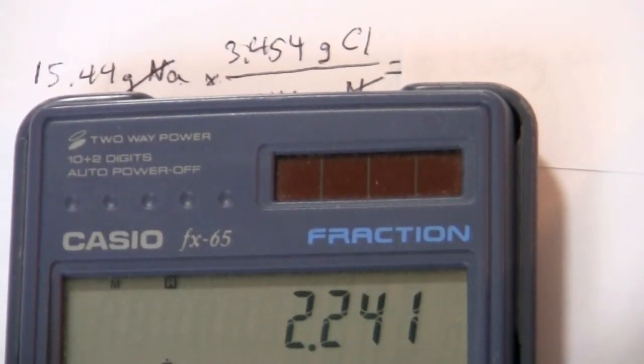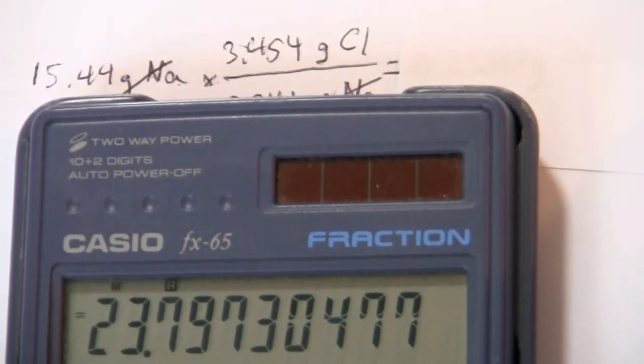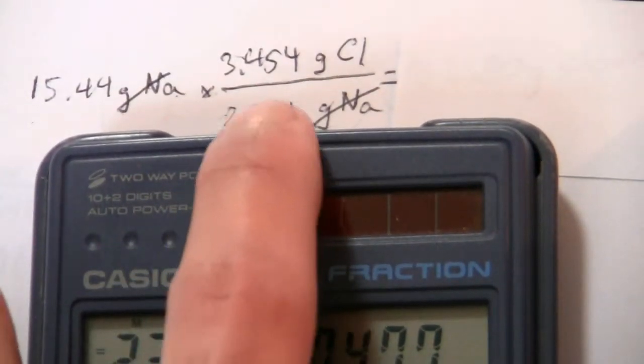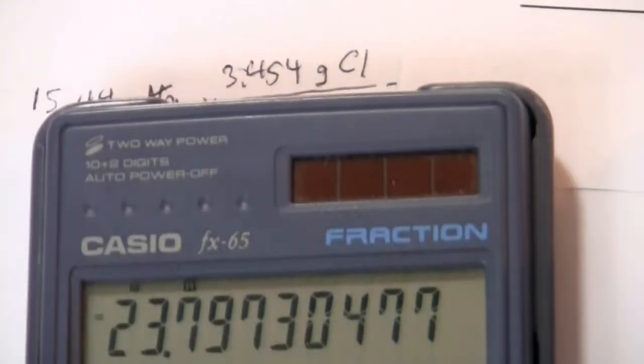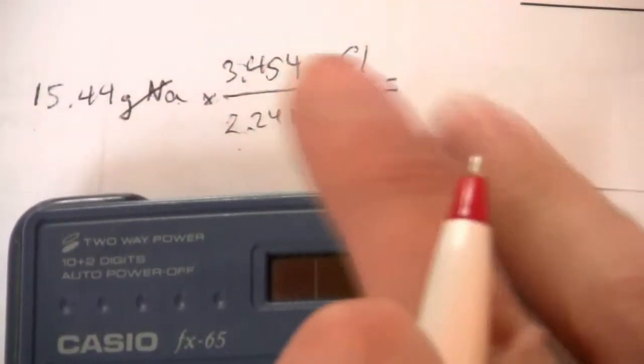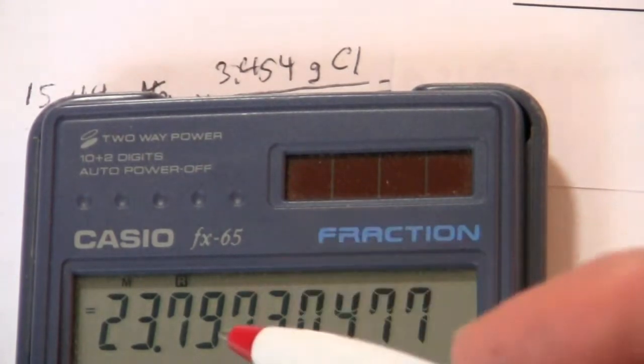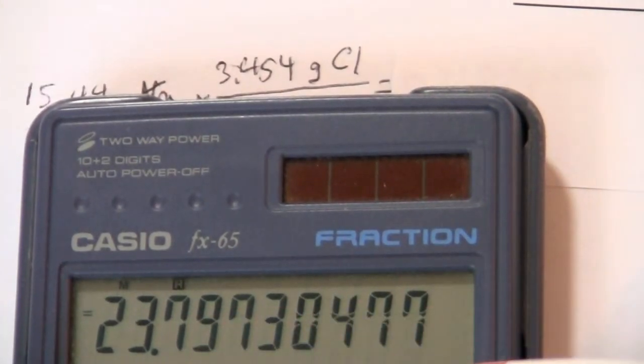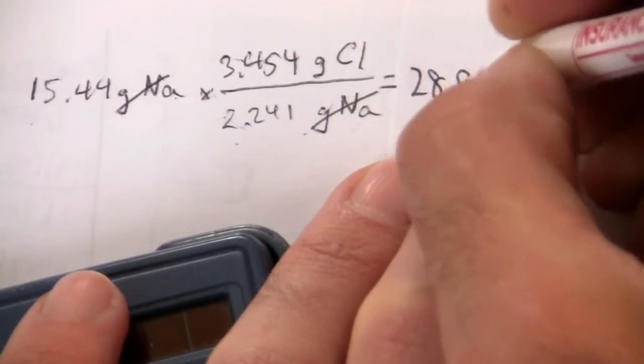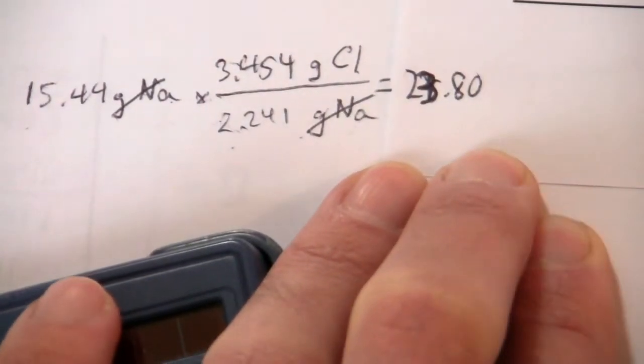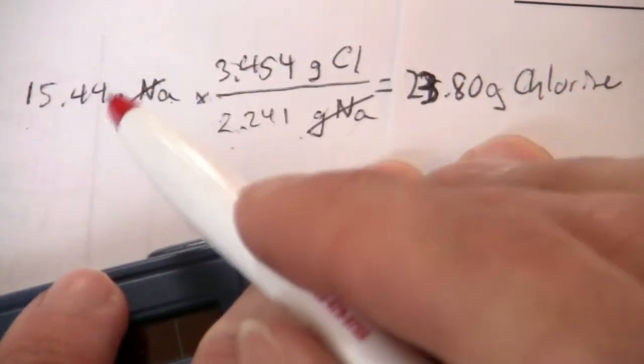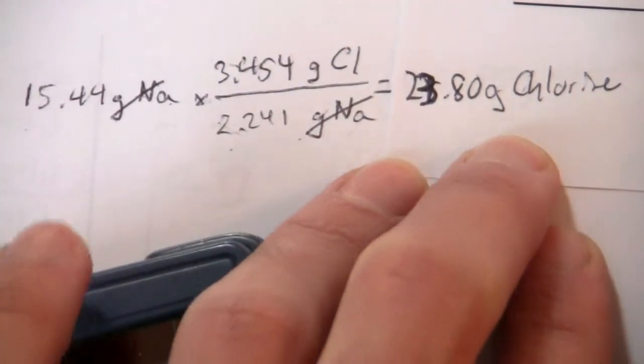So what we end up with is 23.797 and we can go ahead and round this to four significant figures since all of our numbers are four significant figures, and this will be 23.80. Since this is greater than 5, this rounds up to 8.0. So 23.80 is my answer there. That is the mass of chlorine that reacts with the 15.44 grams of sodium.